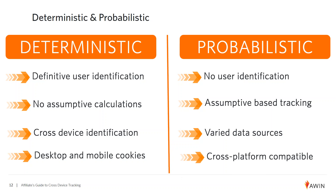Probabilistic can incorporate a variety of data sources and is cross-platform compatible. But one of the challenges is: how do you really know that's the right person? If you've got 20 people all in the same coffee shop, basically all sharing the same IP address, how do you know who's who? That's one of the challenges with probabilistic.